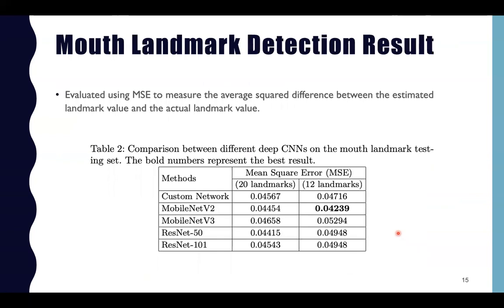We evaluated the mouth landmark detection performance across different deep CNN models: MobileNet V2, MobileNet V3, ResNet-50, ResNet-101, and a custom network. These models were evaluated using MSE in both 12-landmark and 20-landmark settings. As shown in Table 2, ResNet-50 and MobileNet V2 achieved the lowest MSE in both the 20-landmark and 12-landmark settings.